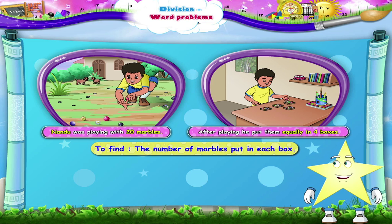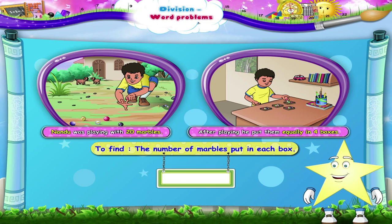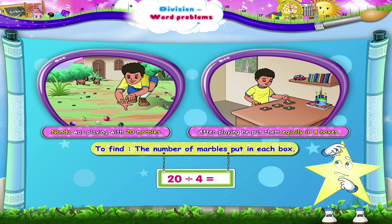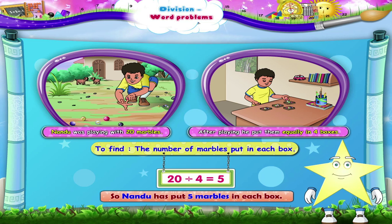We have to find how many marbles are put in each box. So we shall divide 20 by 4. What is the answer? Yes, 5. So Nandu has put 5 marbles in each box.